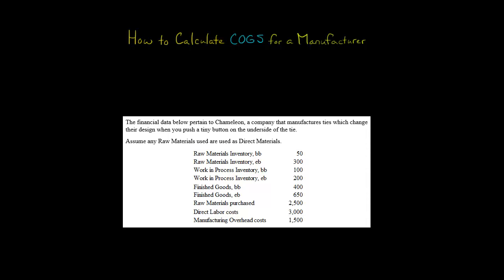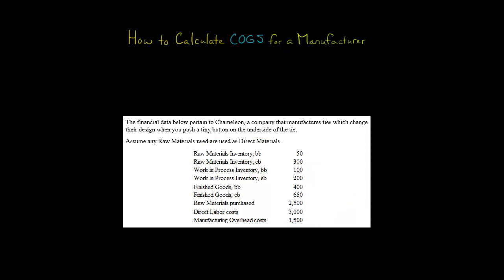In this video, we're going to use the data here to calculate cost of goods sold for a manufacturer. Let's take a look at our data. We've got the three types of inventory that manufacturers have right here: raw materials inventory, work in process inventory, and finished goods inventory.